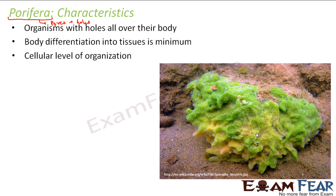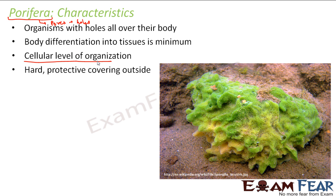Porifera are at a cellular level of organization because there are no tissues or organs found — differentiation into tissues is minimum. The different levels of organization are: cell, tissue, organ, and organ system.